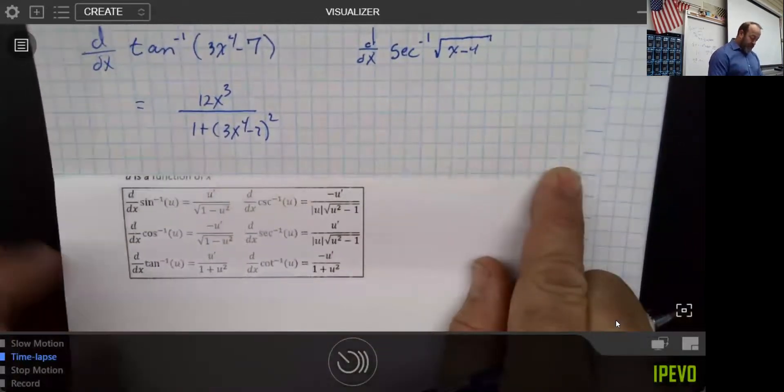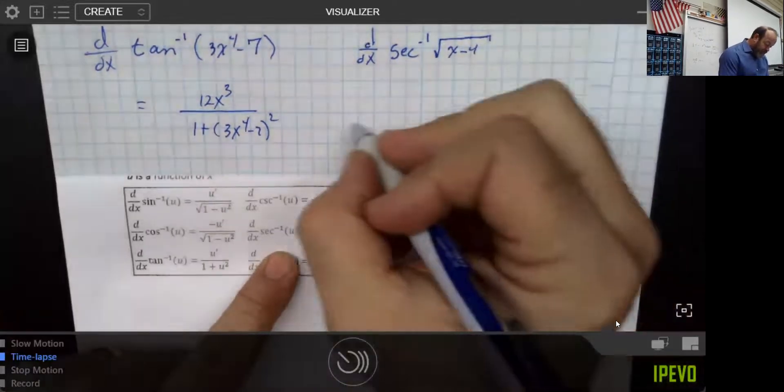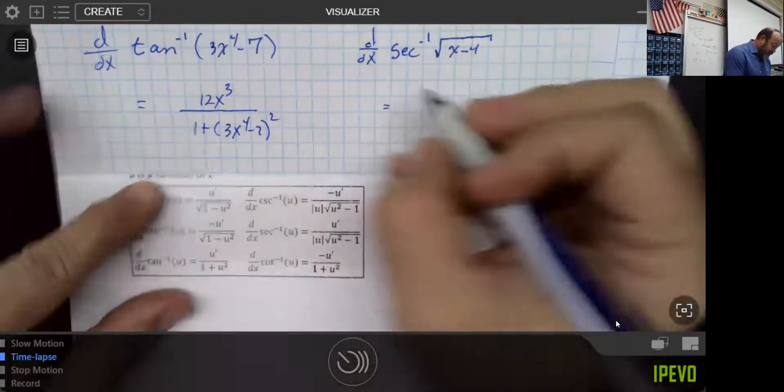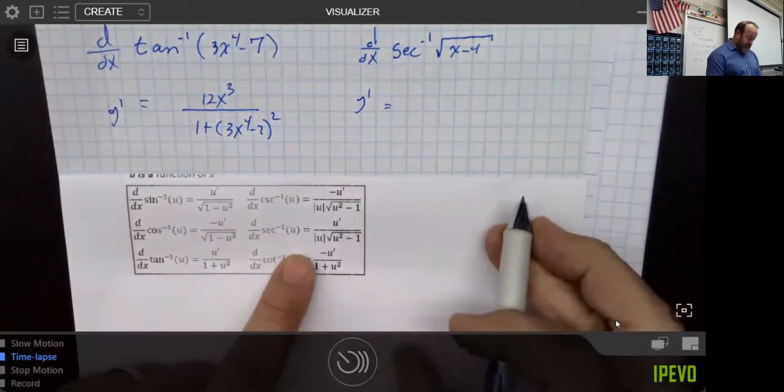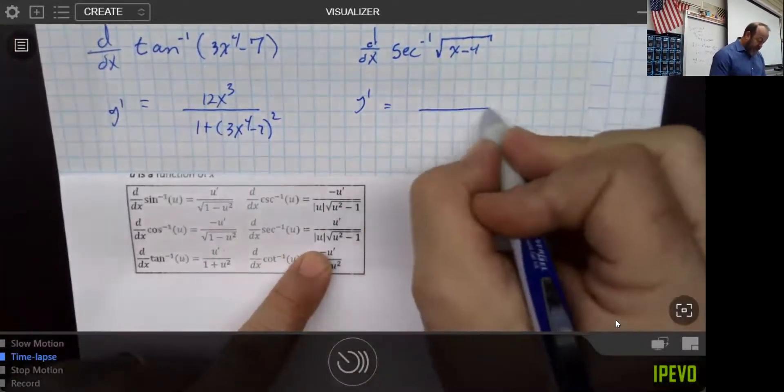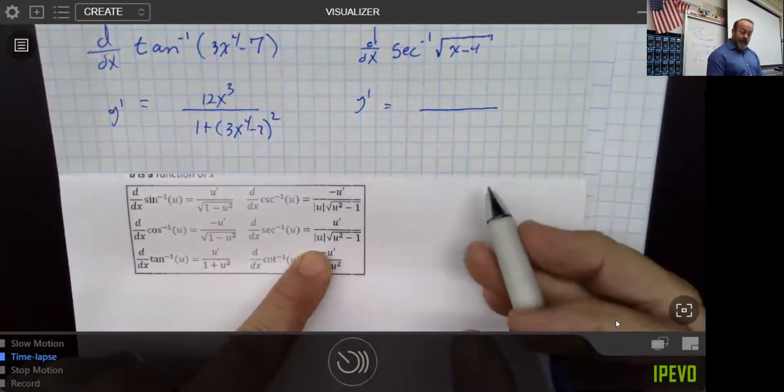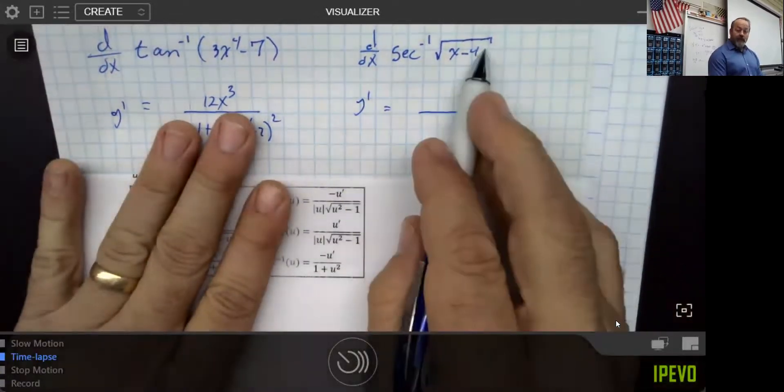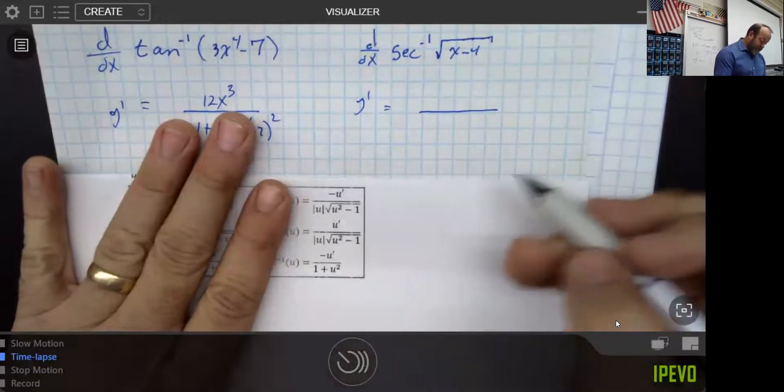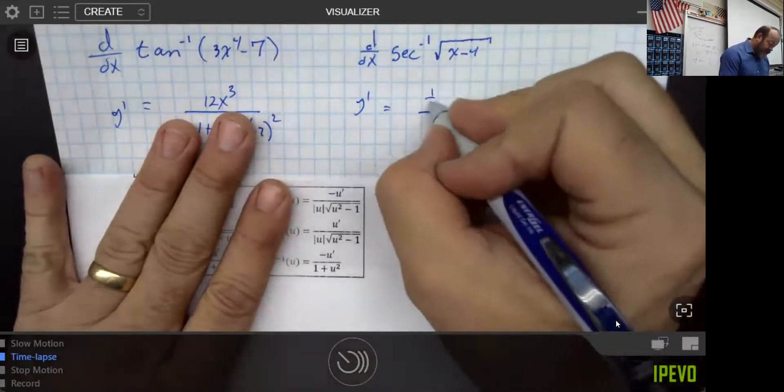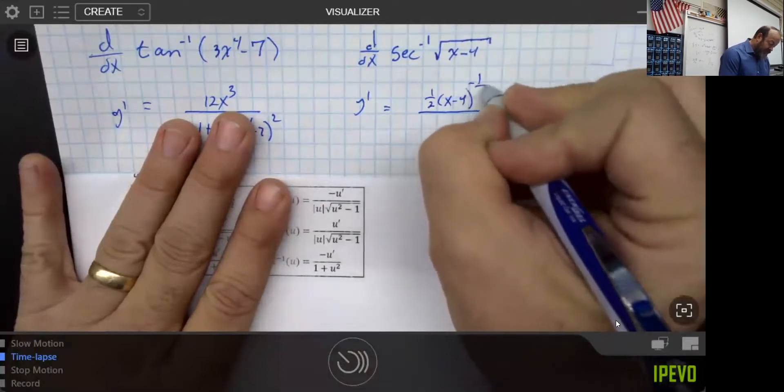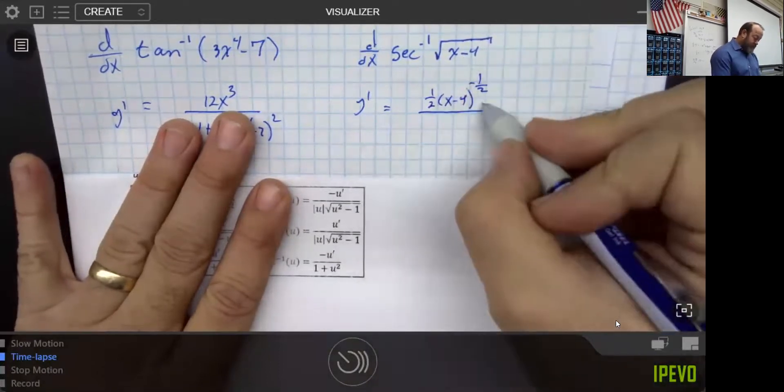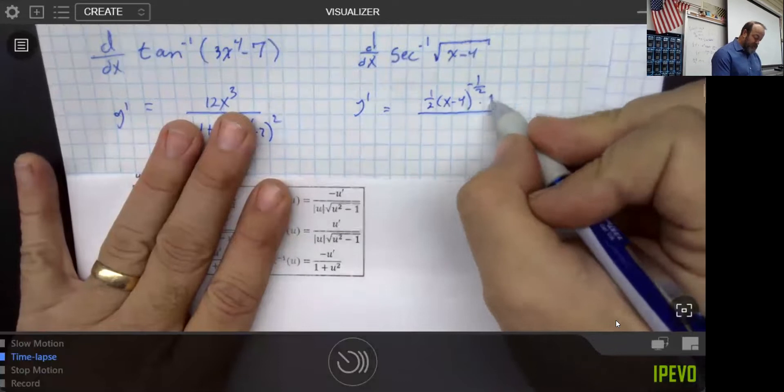Now, this one's a little bit weird. The derivative of a secant, so here's y prime. I should do that. y prime equals that. So, my secant inverse, the first thing is, on the top, the derivative of the inside piece goes in there. So, I'm taking the derivative of the secant of the square root of all that stuff. So, it would be 1 half x minus 4 to the minus 1 half times the derivative of what's inside to the inside, which is just 1.